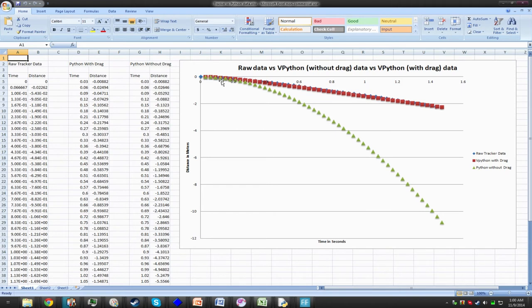As you can see, the data from Python with drag is nearly the same as the raw tracker data. And the data from the Python code without drag is nowhere near the original data, seen here in green triangles.